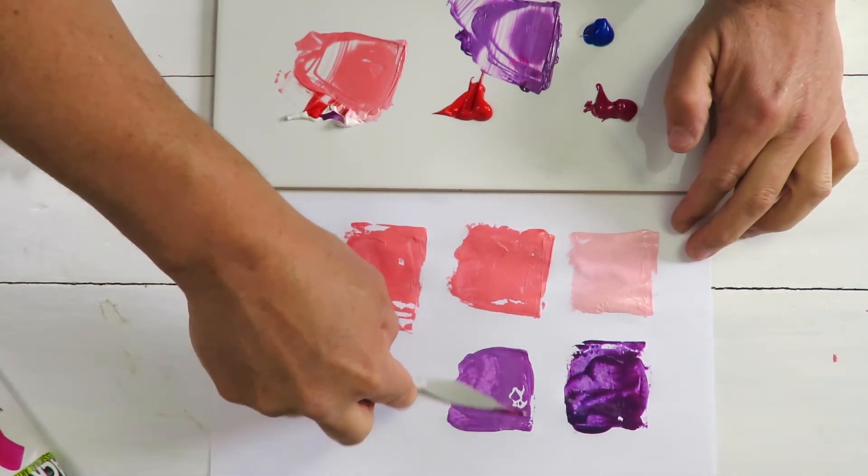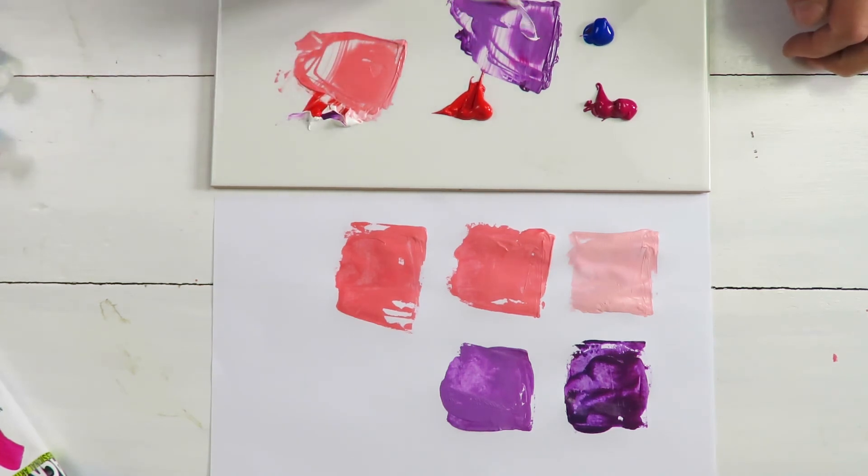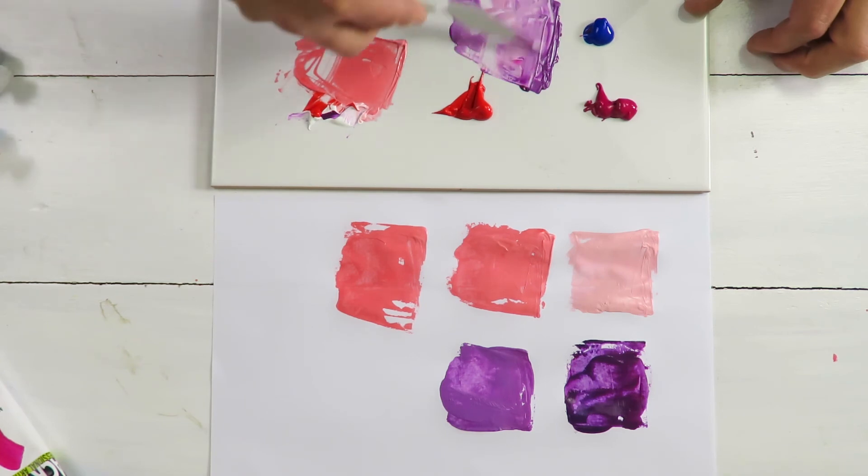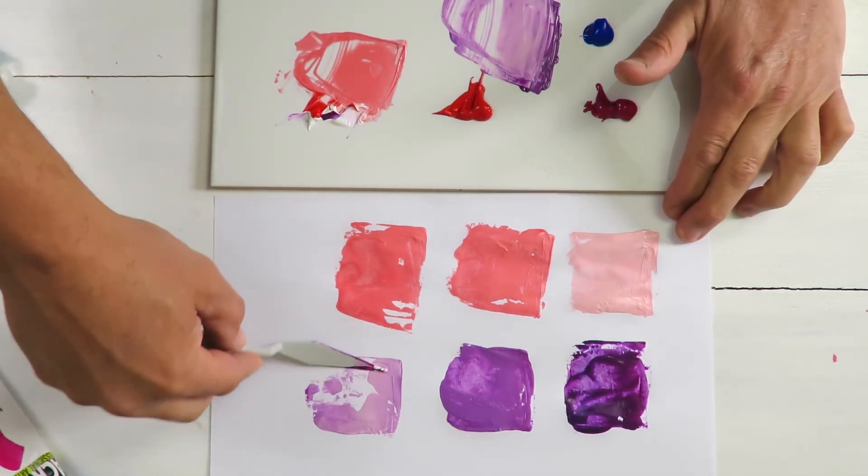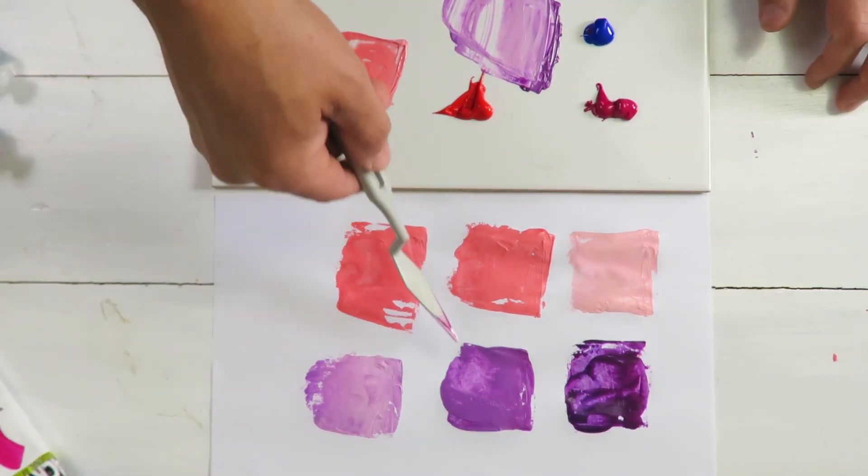Look at that there. We'll have that a bit lighter again, a bit white in it. There you go. So you've got some light mauve colours here.